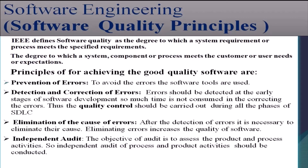Various principles are followed for achieving good quality software. It includes the prevention of errors. To avoid errors, software tools are used. Detection and correction of errors — errors should be detected at early stages of software development so much time is not consumed in correcting them. Thus, quality control should be carried out during all phases of the software development lifecycle.